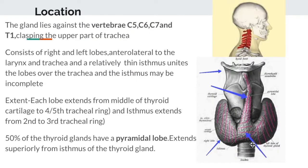This gland lies against the vertebrae C5, C6, C7, and T1, clasping the upper part of the trachea. It consists of right and left lobes, located anterolaterally to the larynx and trachea. A relatively thin isthmus unites the lobes over the trachea, and the isthmus may be incomplete.